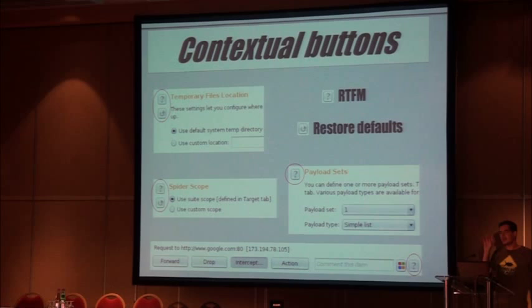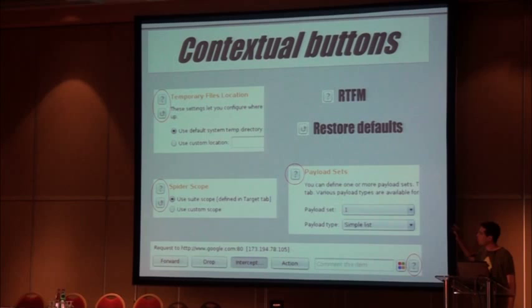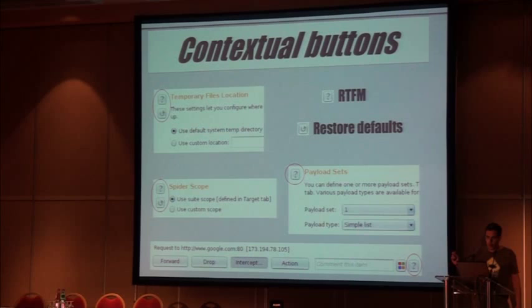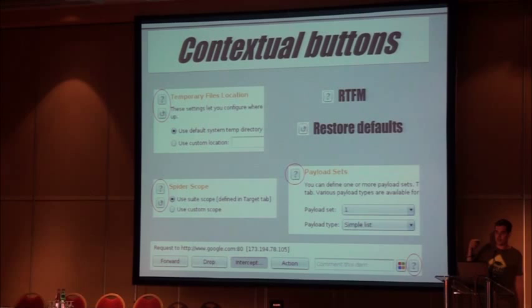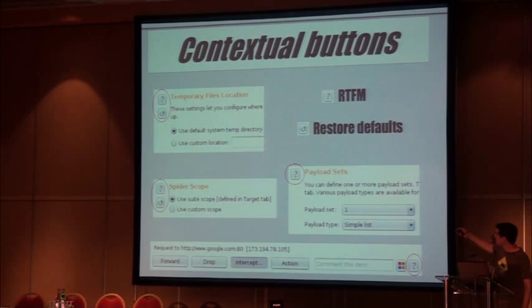GUI navigation. It's a GUI tool so you have a lot of tabs with a lot of fields. A few tricks. You have contextual buttons everywhere — one is documentation, one is restore defaults, and they are contextual. If you click the documentation button for a specific option, you only get the relevant docs. If you click restore defaults, it only resets that section. So if you have complicated settings elsewhere for brute forcing a complex application, you can reset just one location without messing up your macro settings.